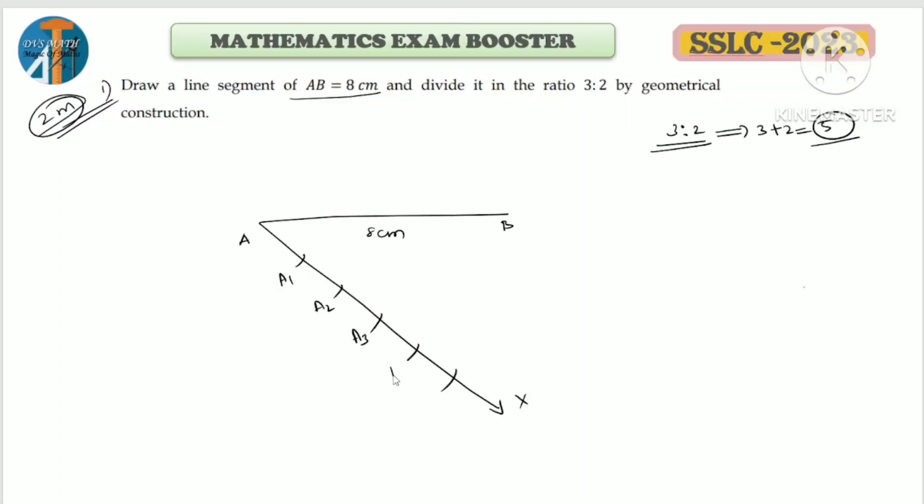Label these points as A1, A2, A3, A4, A5. Next, join the last ratio point A5 to B. If someone says 4:3, you would do 4 plus 3 equals 7 parts. The end of the line segment will join to the last part.